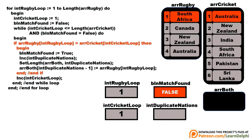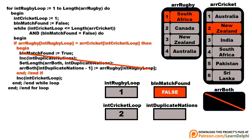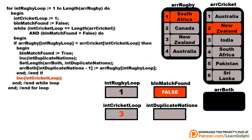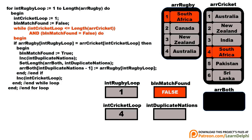If a match is not found, the inner loop skips all those statements and increases the cricket loop counter. New Zealand is not a match, India is not a match — the boolean stays false and nothing is added to the third array. The loop counter keeps incrementing and the inner loop continues to the next element each time. And now it finds a match — South Africa is in both arrays.